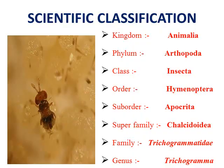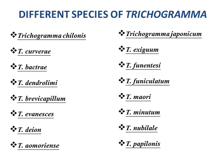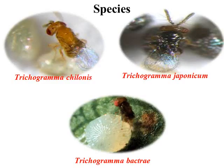Scientific classification of Trichogramma: Kingdom Animalia, Phylum Arthropoda, Class Insecta, Order Hymenoptera, Suborder Apocrita, Superfamily Chalcidoidea, Family Trichogrammatidae, Genus Trichogramma. During research, different species identified for Trichogramma include Trichogramma chilonis, Trichogramma japonicum, and Trichogramma bactrae — these are some common species being used nowadays in pest management and are very popularly used in agriculture.